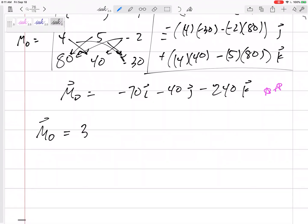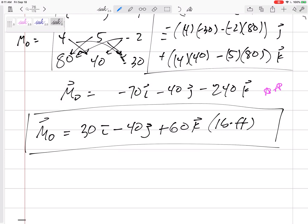The moment about O is 30 in the i minus 40 in the j plus 60 in the k. Units: pound-feet. I need units on all my answers. The units for a moment, just leave the units as whatever units the force had and whatever units the moment arm have. And I don't mind if you do pound-feet or feet-pound, but I do need units on there. Alright.